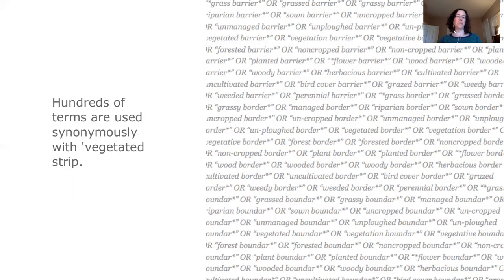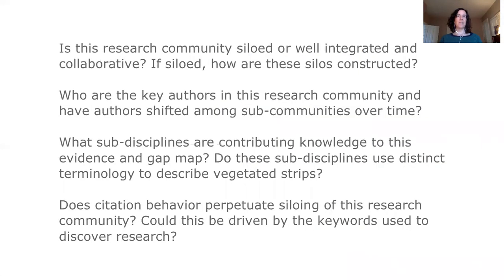This is something we can probe further using a network approach. We intend to use different types of networks — the types I just described — to provide a deeper level of analysis into the social structure of this research community. There are a number of possible research questions we may explore, but ultimately we hope to provide some understanding of how this research community is structured, what might be driving that structure, and how this new information can inform the direction of future research on the roles of vegetated strips in agricultural fields.